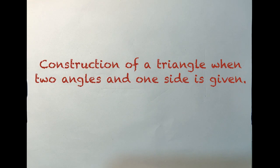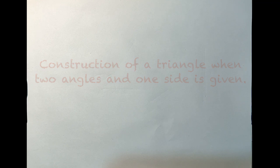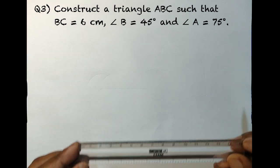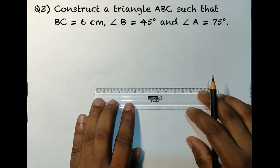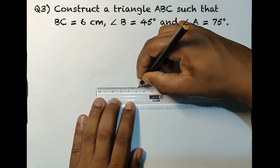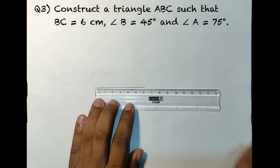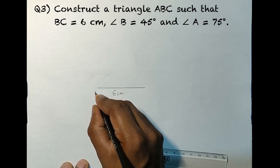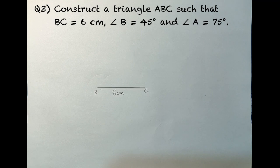Now let's construct a triangle when two angles and one side is given. Construct a triangle ABC such that BC is 6 centimeters, angle B is 45 degrees, and angle A is 75 degrees. To draw the triangle we need the base, so with the help of a ruler let's draw the base BC, which is 6 centimeters. Write the measurement 6 centimeters and label it B and C. Now we have the base ready.